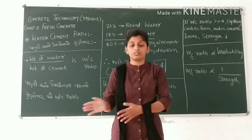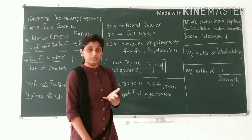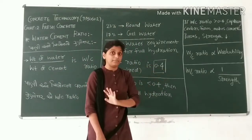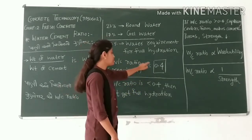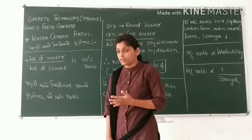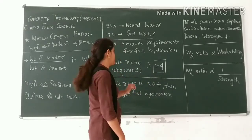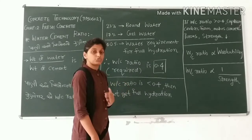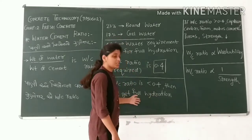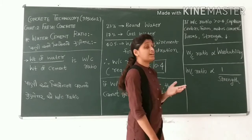So if the water-cement ratio is less than 0.4, the hydration process will not be complete and the strength of the concrete will be adversely affected. If the water-cement ratio is below 0.4, the required water cannot be added and strength will decrease.